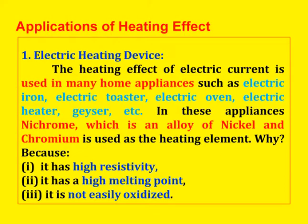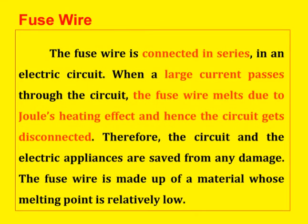This is also very important for objective type questions. Applications of the heating effect of current: first, electric heating devices. The heating effect of electric current is used in home appliances such as electric iron, electric toaster, electric oven, etc. In these appliances, nichrome — an alloy of nickel and chromium — is used as a heating element, because of its high resistivity, high melting point, and because it is not easily oxidized. Next, fuse wire. Fuse wire is connected in series in an electric circuit. When a large current passes through the circuit, the fuse wire melts due to Joule's heating effect and hence the circuit gets disconnected. The fuse wire is made of material whose melting point is relatively low, so the circuit and electrical appliances are saved from damage.